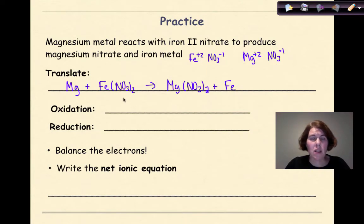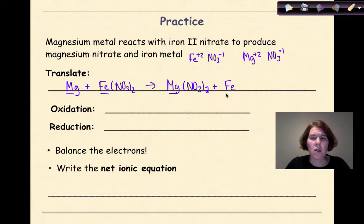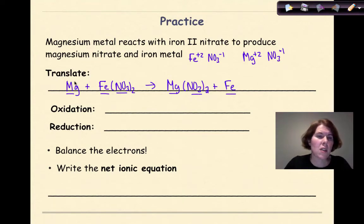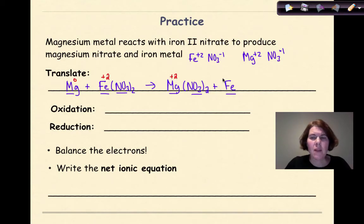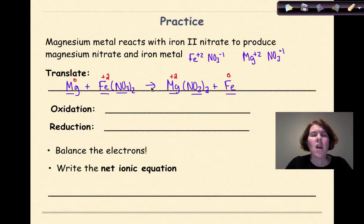I'm going to check and see if I need to balance it, which in this case I don't think I do. One Mg, one Mg — one Fe, one Fe — two nitrates, two nitrates — and I'm all balanced. Now I want to go in and assign oxidation numbers. Mg is going to be zero. Fe, if I uncrisscross it, is going to be plus two. Mg over here is going to be plus two. Fe is going to be zero. The nitrate, like I said before, is going to be a spectator ion — it's not involved in the redox reaction, and therefore it will not show up in our net ionic equation.